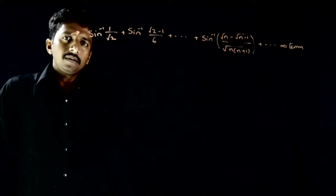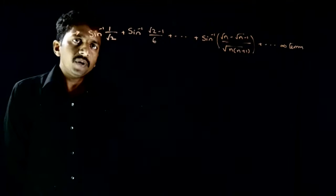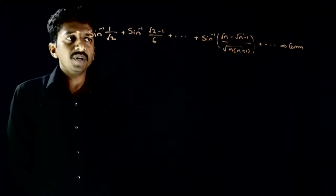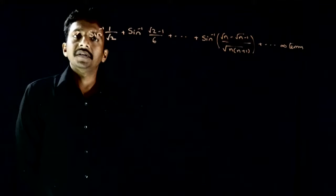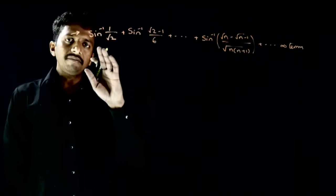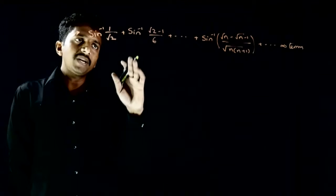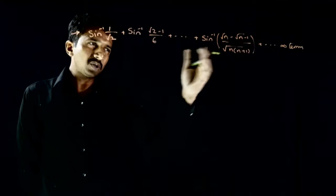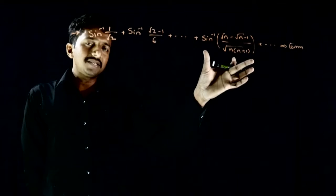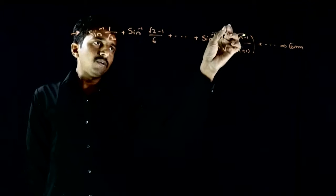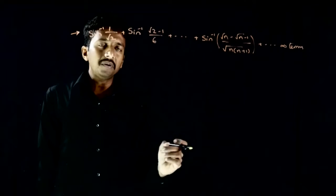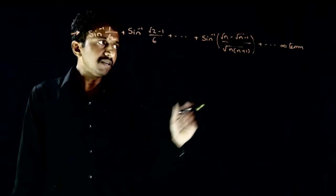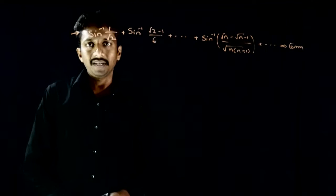Welcome students. This question involves an infinite inverse trigonometric sequence: sine inverse of 1 by root 2, plus sine inverse of root 2 minus 1 by root 6, and so on. The general term is sine inverse of (root n minus root(n-1)) divided by root(n(n+1)), summed up to infinite terms.